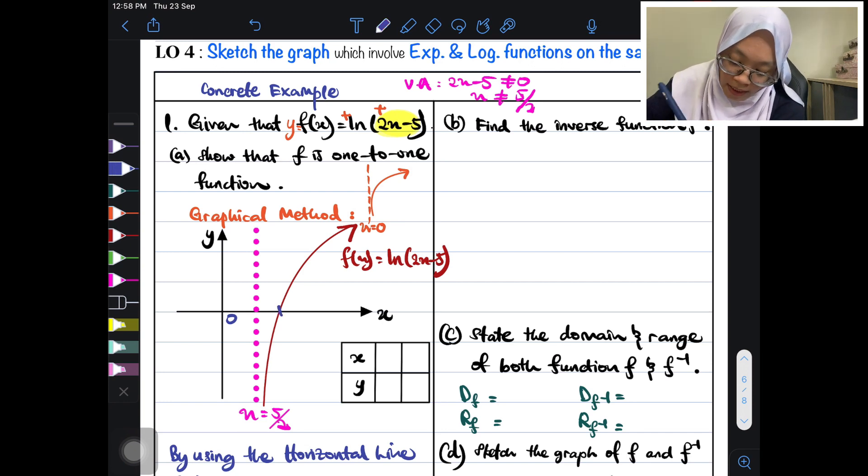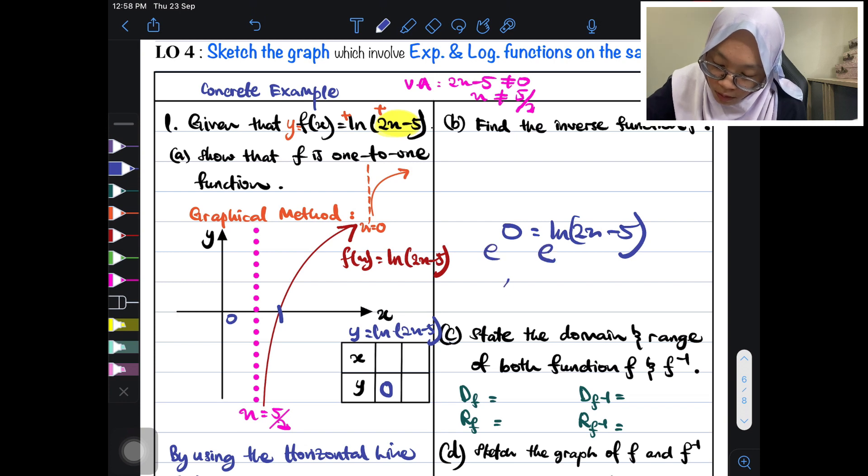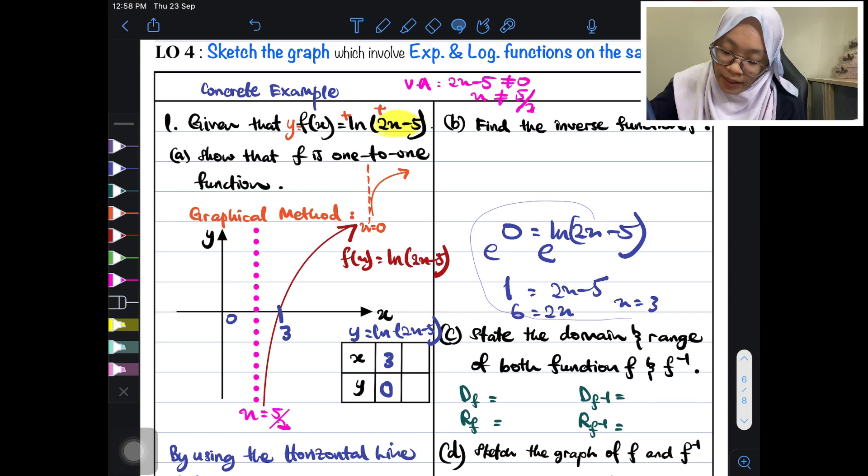The thing is, you tak habis jawab lagi sebab you tak ada x intercept. So x intercept kamu apabila y = 0. So when y is 0, tulis function dulu. When y is 0, your x is, exponent both sides, you are going to dapat 1 is equals to 2x minus 5. Therefore you get 6 is equals to 2x. Therefore your x is equals to 3. So x intercept kamu adalah 3. So label lah 3.